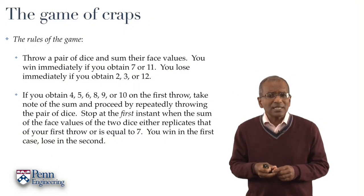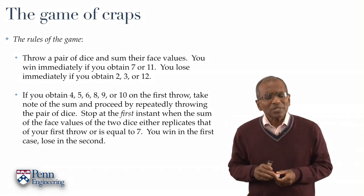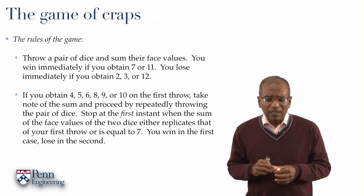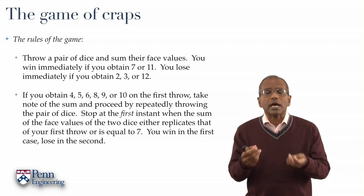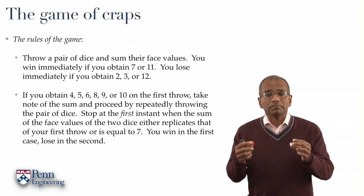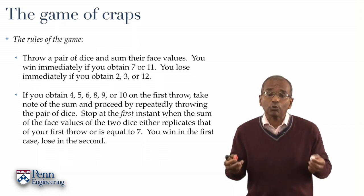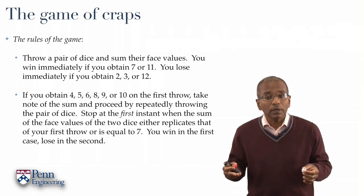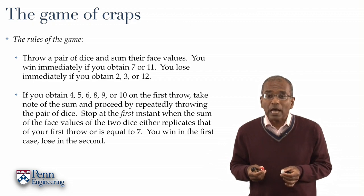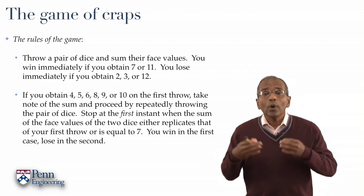Now, admittedly, this is a dice game where one repeatedly throws a pair of dice. But the rules are arcane, peculiar, singular. The way this game functions is one throws a pair of dice, looks at the face values, and sums them. If the sum of the face values is 2, or 3, or 12, then you lose immediately. If the sum of the face values happens to be 7 or 11, then you win immediately.